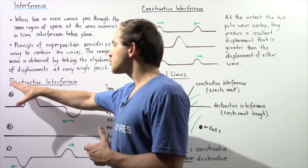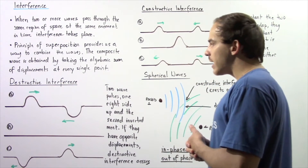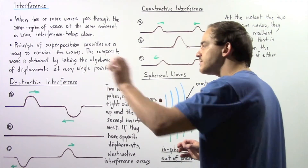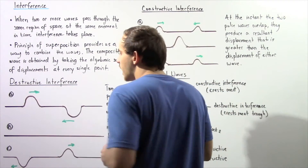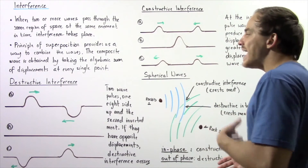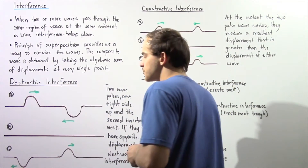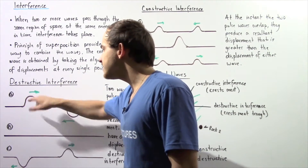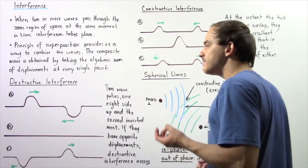Let's begin with destructive interference and look at diagram A. In diagram A, we have a thin long cord. On the left side, we have one wave impulse that is right side up, and on the right side, we have a second impulse that is inverted compared to the first. The amplitude of the first impulse is A, and the amplitude of the second impulse is negative A.